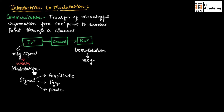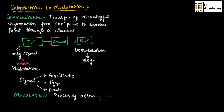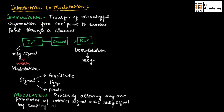Now, in modulation, we take a high frequency carrier signal and then any one of the parameters of the carrier signal will be altered according to the message signal. We can define modulation as a process of altering any one parameter of a carrier signal with respect to the instantaneous value of the message signal, by keeping the other two parameters constant.